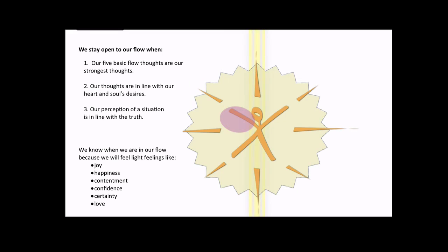There are many different words to describe this flow of love from the source of unconditional love. We stay open in our flow when we're thinking one of our five basic flow thoughts and they're our strongest thoughts. Our five basic flow thoughts are I am, I can, I know, I have, and I want. When these thoughts are our strongest thoughts they'll feel like a magical what if is preceding them. It'll feel good and have a lot of energy and flow.